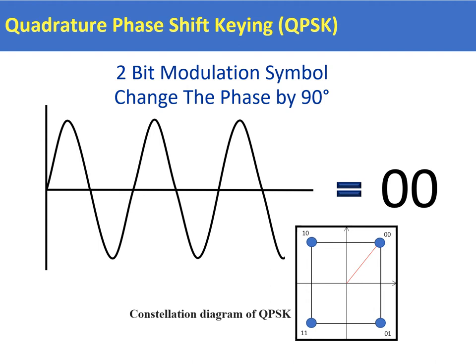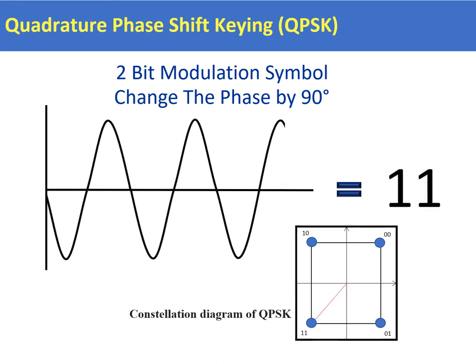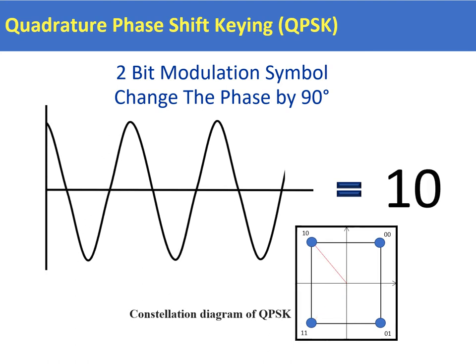We can make this a little bit more sophisticated by using Quadrature Phase Shift Keying, or QPSK. Here we've got a two-bit modulation symbol, and we're going to achieve the two bits by changing the phase of the carrier by 90 degrees. As you can see on the constellation diagram, we have four different symbols represented going from 00 to 01 to 11 to 10. By simply changing the phase we can change the value — for example, by changing the phase by 90 degrees we change the symbol to 01, then 11, then 10, and so on.